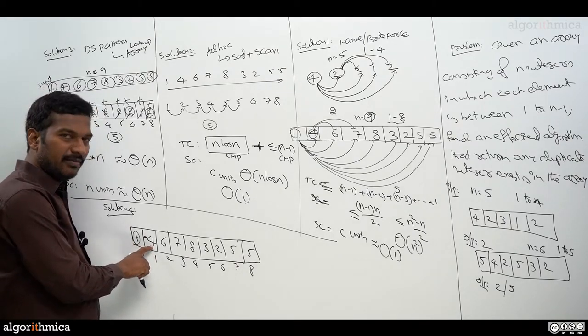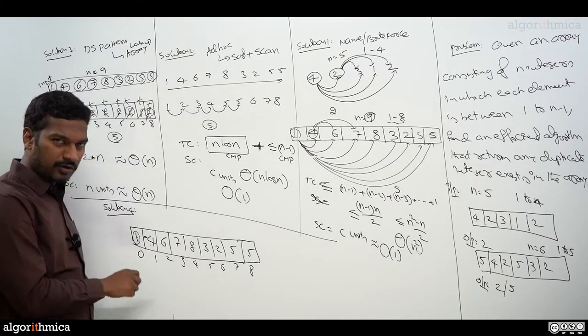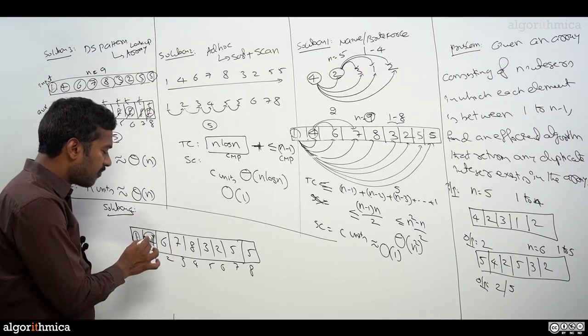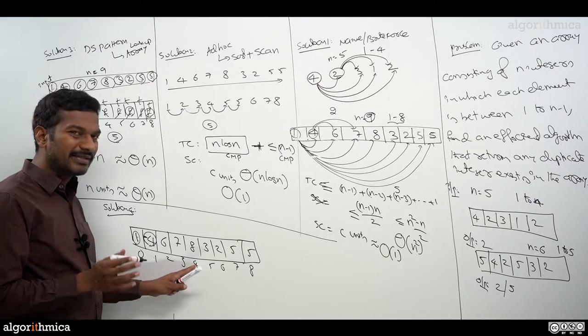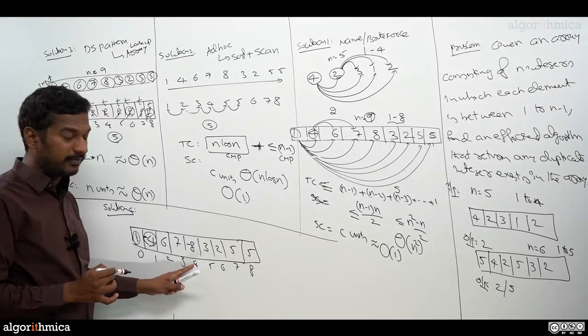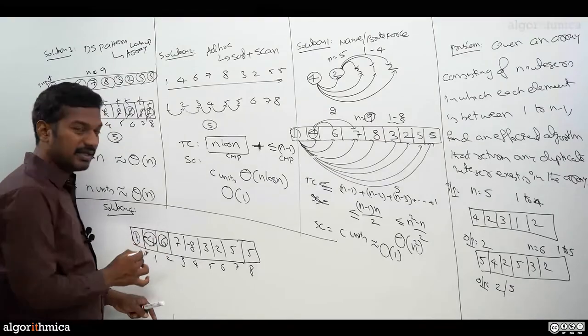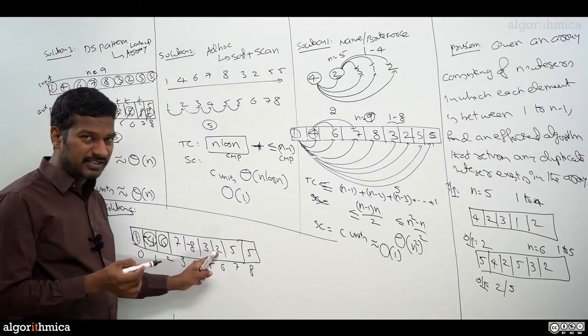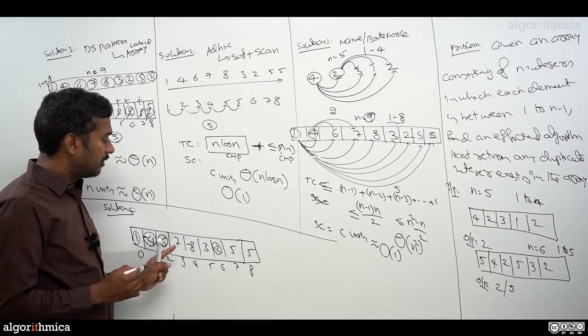Go to the second element, which is minus 4. Take absolute of that, which is 4. I'm not losing the data. Go to the fourth index. It's positive here. Positive means 4 is seen first time. Remember that by negating the value over here. Third element is 6. Take absolute, go to 6. Value is positive. 6 is seen first time. Remember that by negating the content of it.